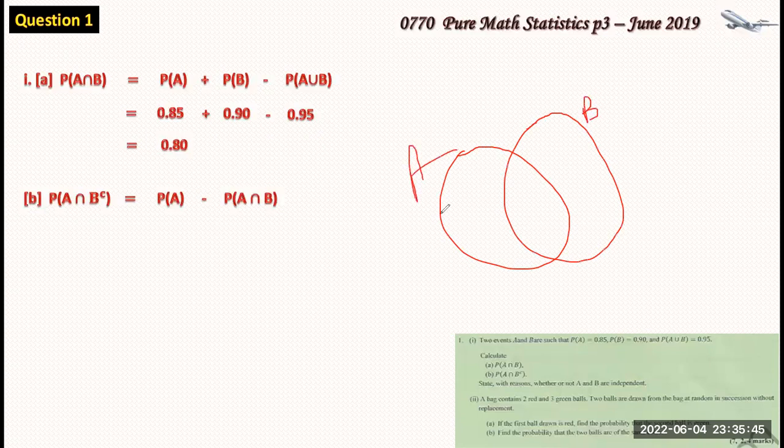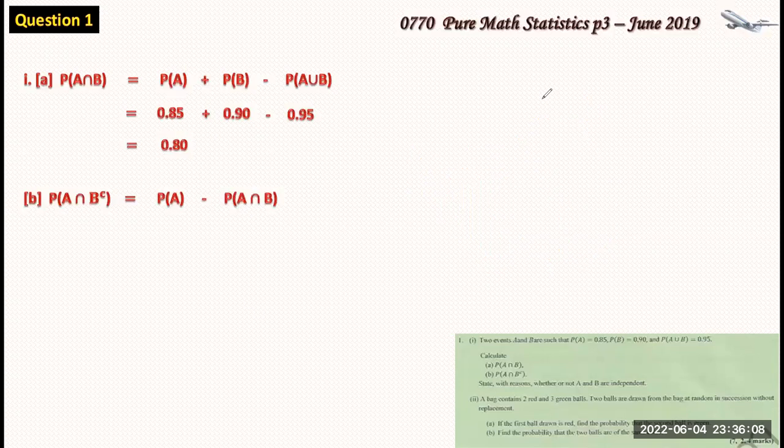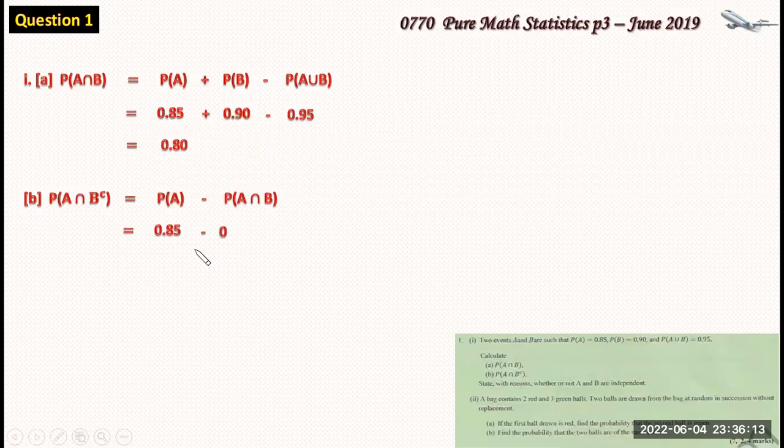So if these are the two sets and this is A and this is B. So the probability of A intersection B complement. So B complement means outside B, right? So it would be just this region outside. So from here, the probability of A intersection B complement is just the probability of A minus the probability of A intersection B. So our result here will give us 0.85 minus 0.80. And this is equal to 0.05.